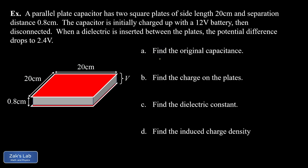Our first question is to find the original capacitance using the formula epsilon_0 times A over d. In the initial state it's just a vacuum, so we substitute in the permittivity of free space — about 8.85 times 10^−12 farads per meter — then the area of the plates in SI units: 0.2 meters squared, divided by the plate separation distance of 0.008 meters.